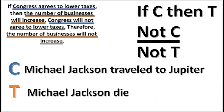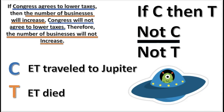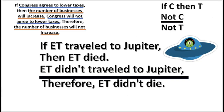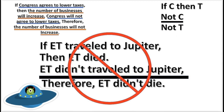When we invented new statements to substitute the place of C and T, we were careful to select statements that everybody agrees about as to the truth value. So suppose instead of Michael Jackson, we chose 'E.T. traveled to Jupiter.' We would get this argument: 'If E.T. traveled to Jupiter, then E.T. died.' Now we're not sure if E.T. would travel to Jupiter or whether he would die. So this argument proves nothing. It's important to pick terms that are very popular and that most people already know the truth value of.